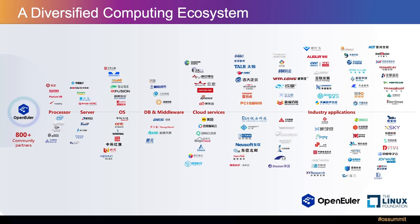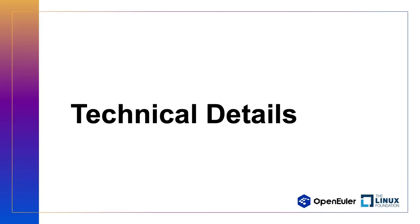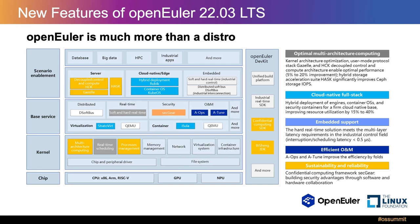Welcome to ZhenYu to bring us the second part of the content. Thank you, Zhongjun. Let's get to the second part of this session. We would like to share some technical details about OpenEuler, and this might give you some ideas about why OpenEuler has grown so fast in China. The first reason is that it is not just a distro for Linux — the community is actually much more than that. It is actually an innovation platform.